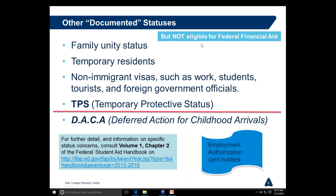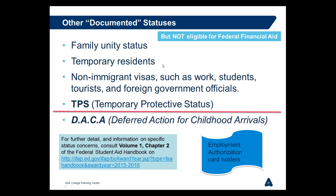DACA—Deferred Action for Childhood Arrivals—also results in an Employment Authorization Card. However, DACA is a bit different from TPS; DACA recipients are not entirely documented. They receive an employment authorization card but have not been granted full legal status.